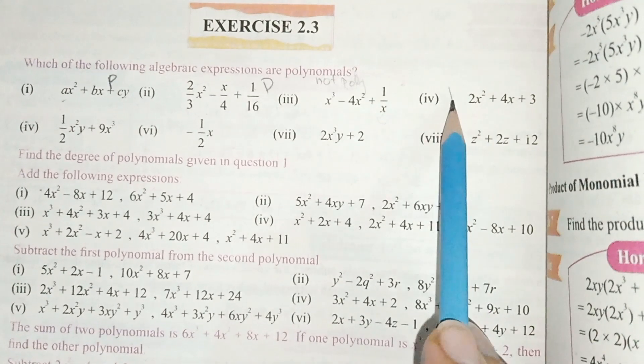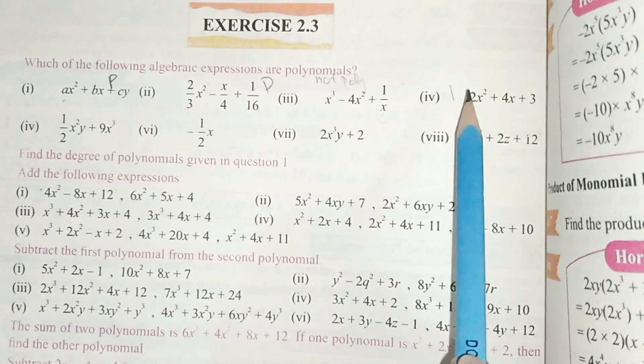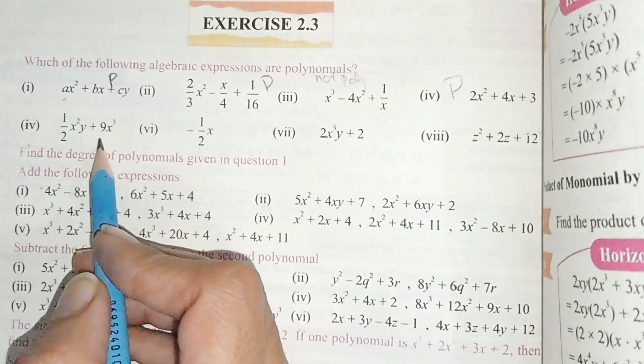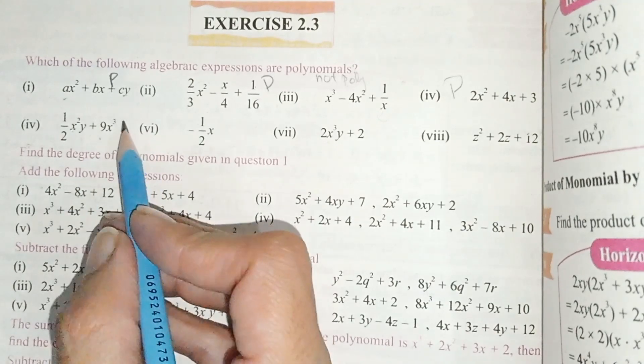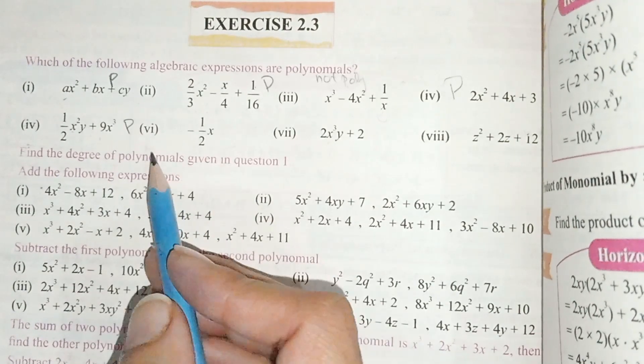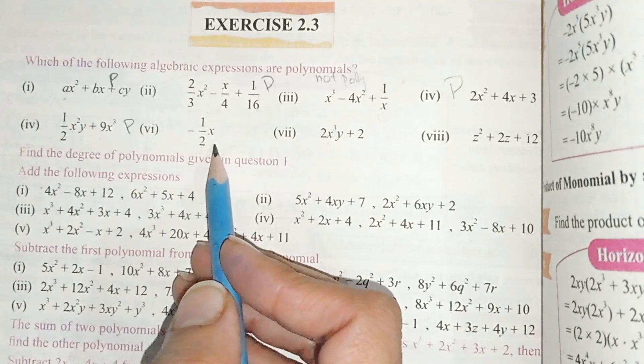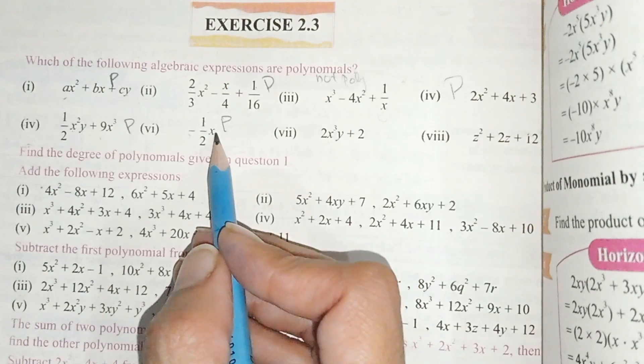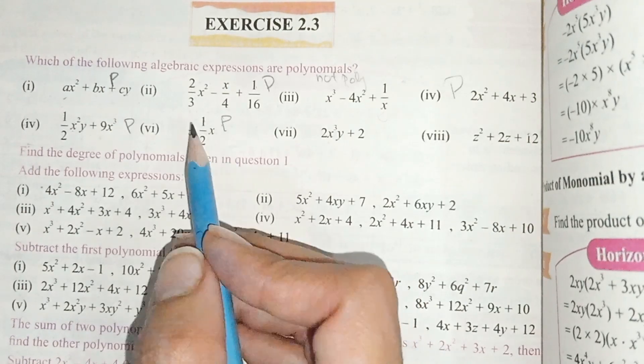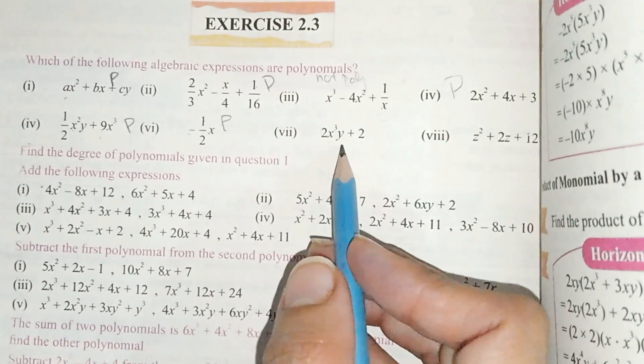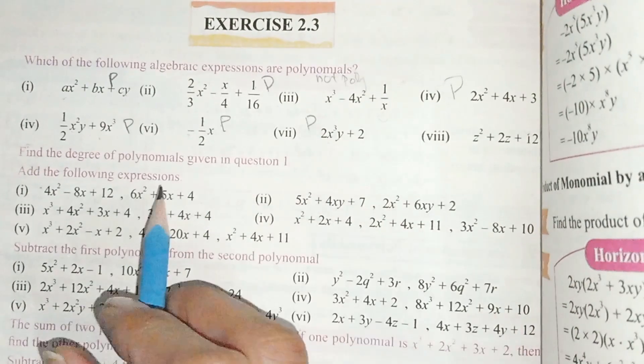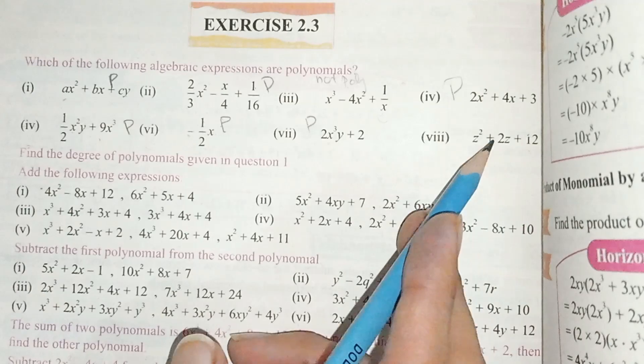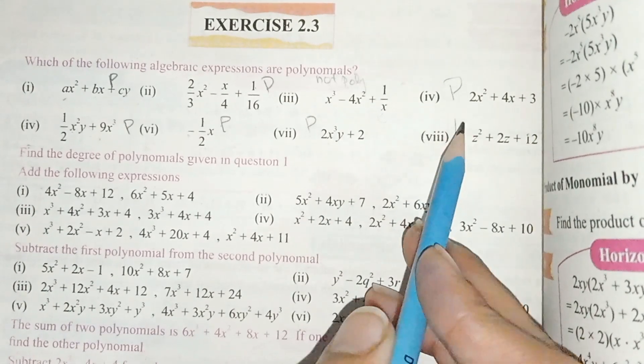This is polynomial. This is 1 by 2. It is not in power. If it is minus in power then it is not polynomial. This is also polynomial. This is also polynomial. If it is 1 by 2 then it is misprint. This is polynomial. This is polynomial.